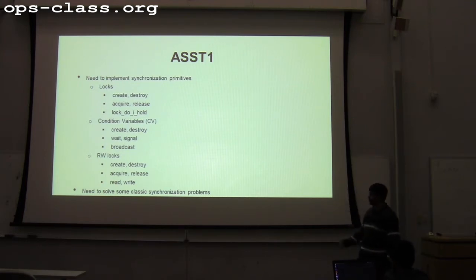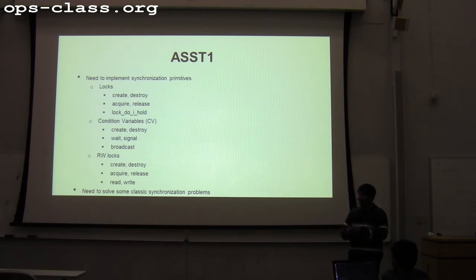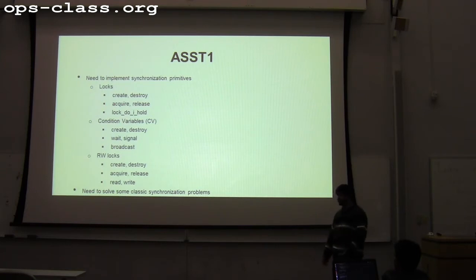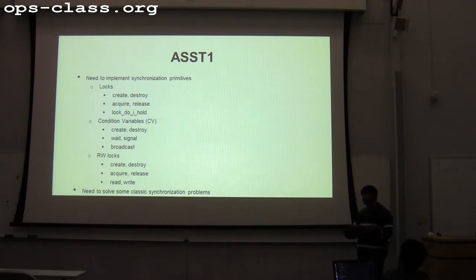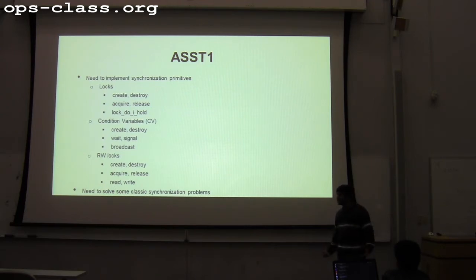The slide shows the functionality you need to implement. All synchronization primitives have create and destroy functions. Locks have acquire and release. For condition variables it's called wait and signal — just different nomenclature. For reader-writer locks, there are two acquire operations: acquire_read and acquire_write, and the corresponding release_read and release_write. Locks have a special API called do_I_hold — since locks are held by a single thread, other threads should not be allowed to release the lock.